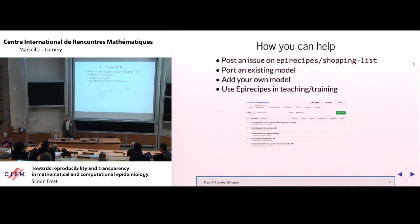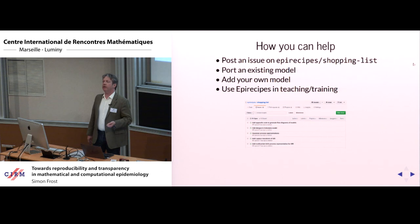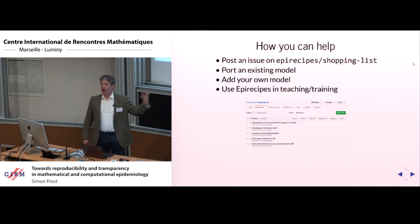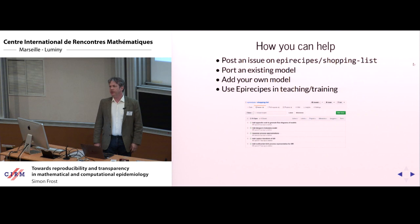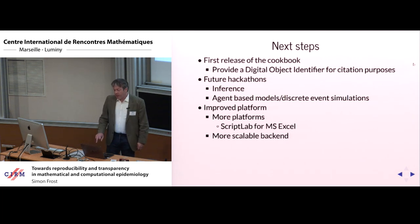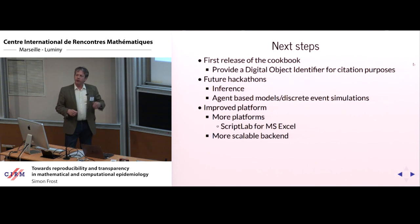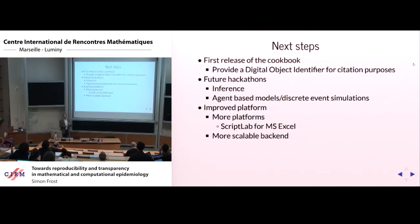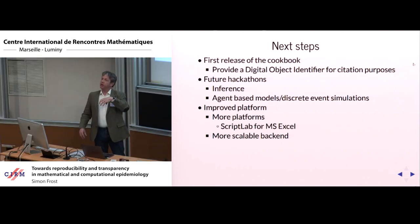How you can help: if you've got a model or a new paper, even if you don't want to implement it yourself, go to the shopping list and say you've got an interesting model that would be great to implement. You can port an existing model, add your own, or just use this for teaching and training. It's issued under a permissive license with essentially no copyright — you just have to acknowledge us. The next steps are to improve attribution so that contributions can be cited, linking back to individuals rather than just the whole organization. Future hackathons — especially an inference-focused one — would be great.